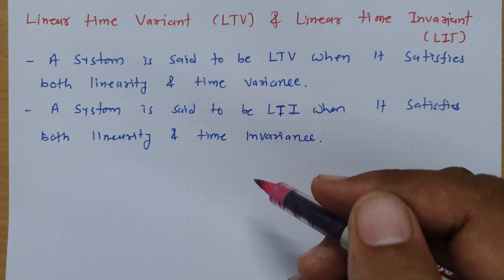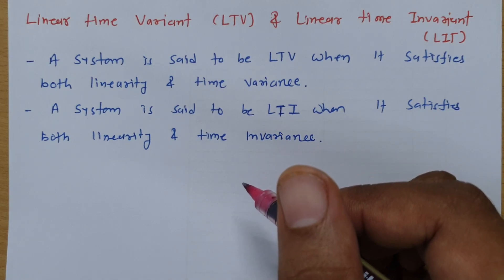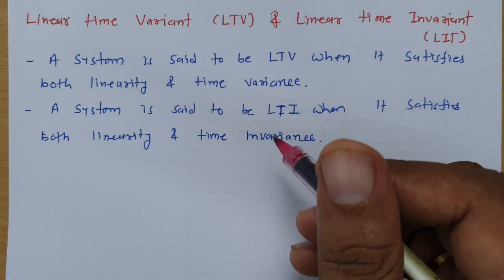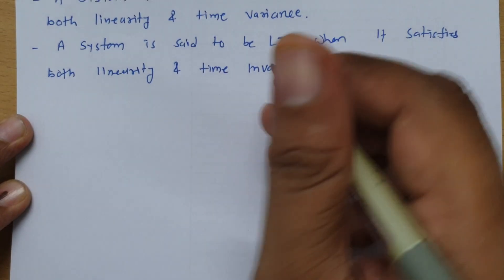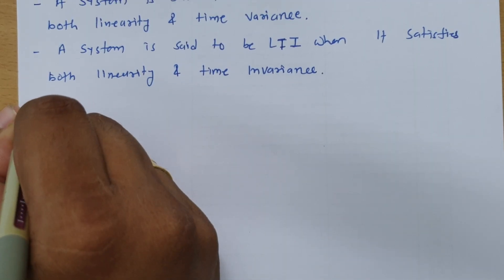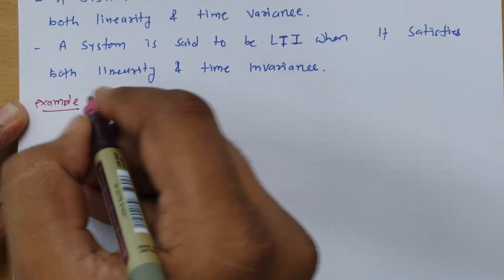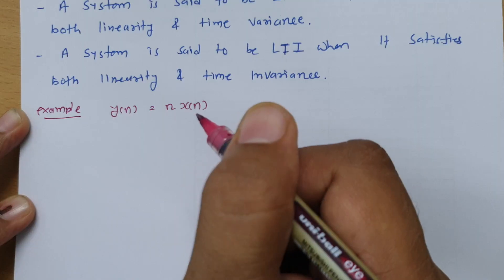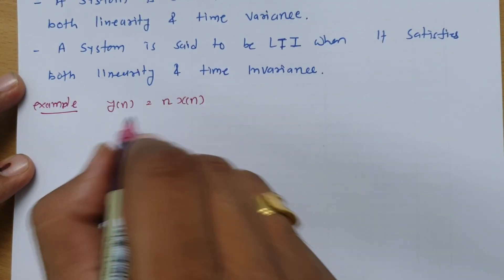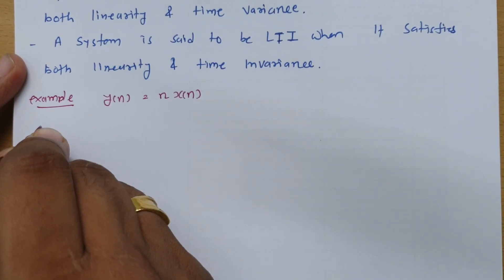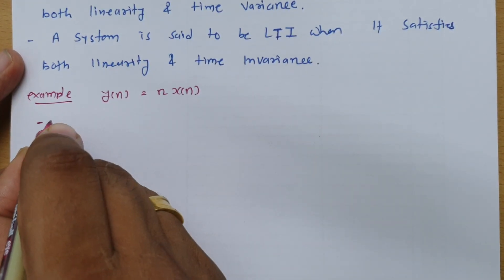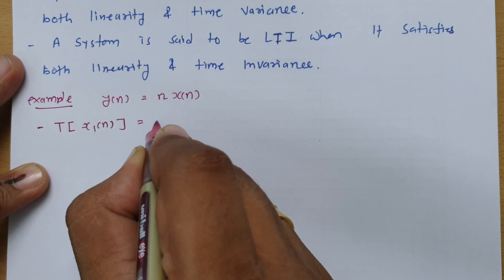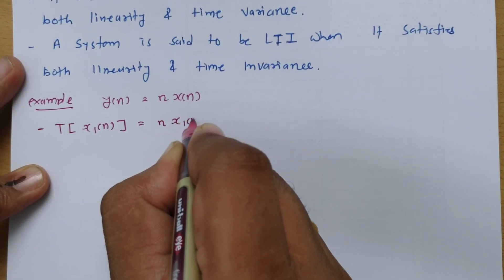Based on those conditions, we can identify whether the system is LTV or LTI, or neither. Let us understand this with one example so it will be more clear. I will be considering the first example: y(n) = n·x(n). First, I will be checking linearity, and for linearity we need to calculate the superposition principle. I will calculate the response when the input is x1(n), so the output will be n·x1(n).